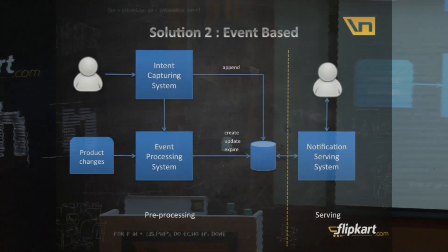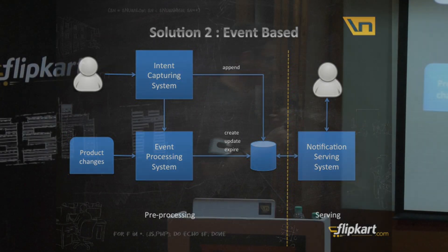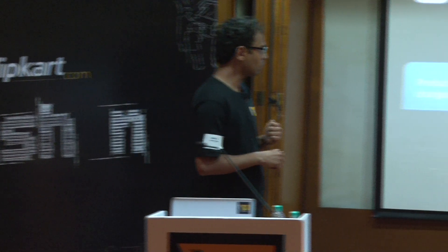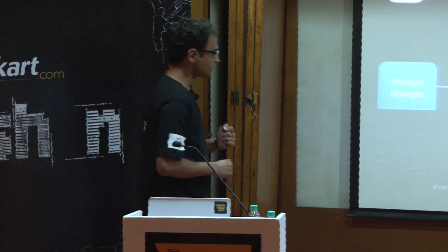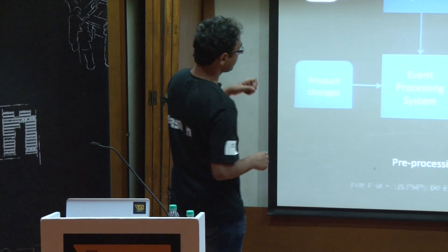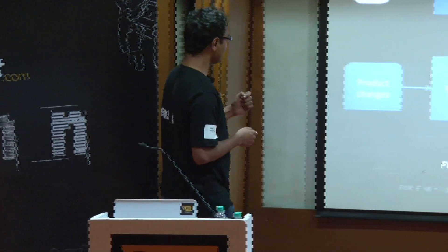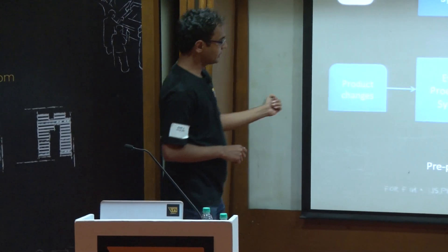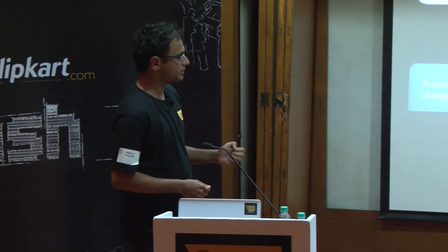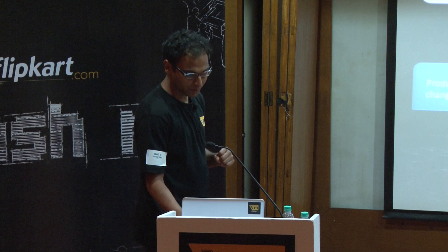What we ended up doing is pulling all the processing into a pre-processing phase, keeping notifications ready. When a user comes in, you just read the notification and serve it back. For this kind of solution, you need to generate notifications as quickly as possible and store them, then just serve them back. We gather all the intents, gather all the products, process them, and create notifications. The whole system has been designed as an event-driven architecture where events propagate from one system to another.